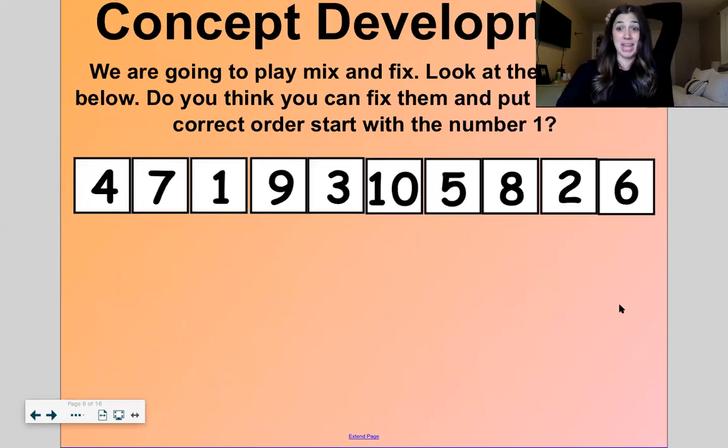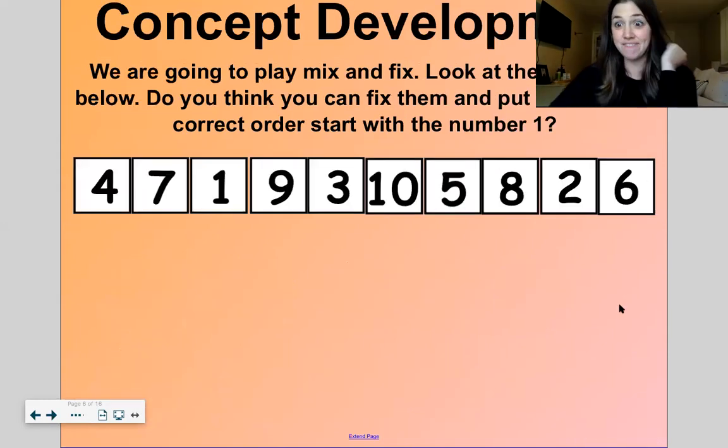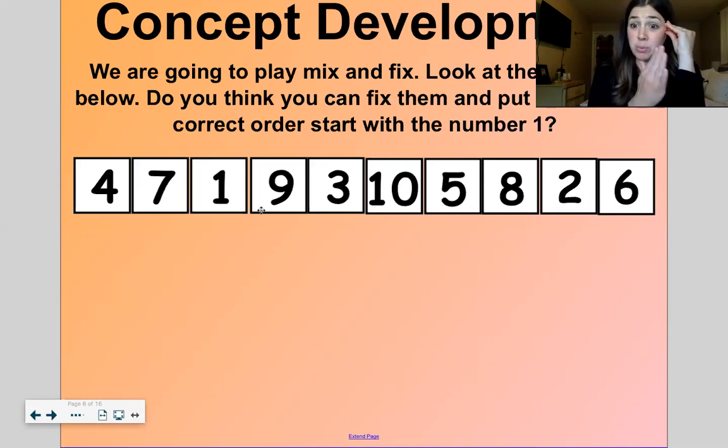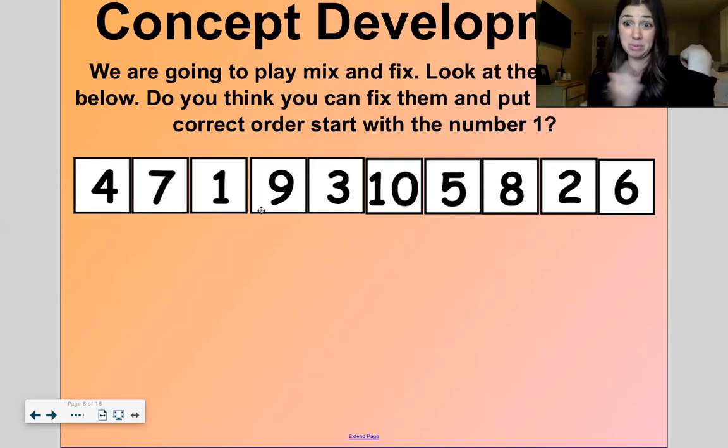Okay, now we're going to play a game called mix and fix. Hey, that rhymes, mix, fix. Look at the numbers below. Oh, goodness. These are all out of order. Do you think we could fix them up and put them in the correct order, starting with the number one? Okay, I think we can do that. So we have to count up. Start with one and then we'll put it all the way up to ten. Just like we did on our number path when we were doing our number stories yesterday. Remember that number path? Let's try and recreate that.